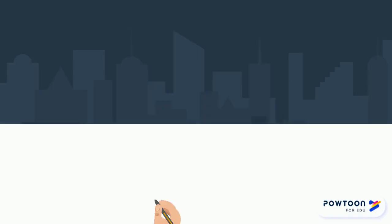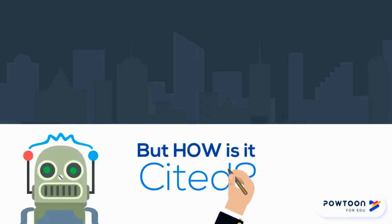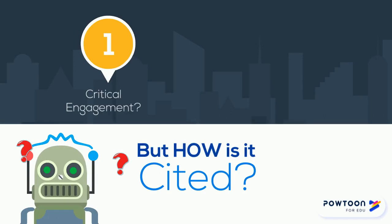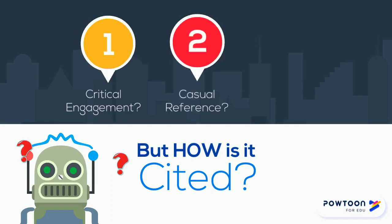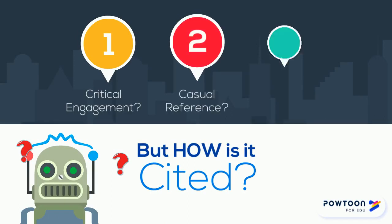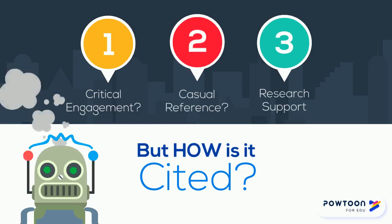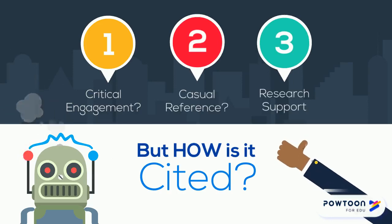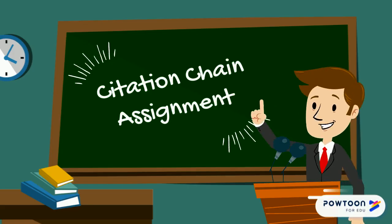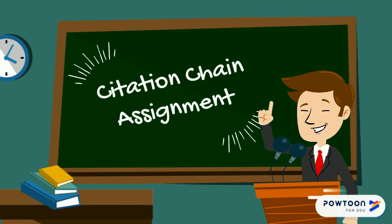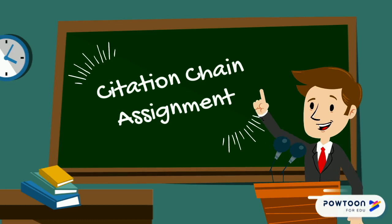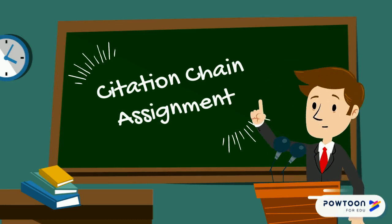The same is true of published scholarly works. Automated citation counters can't typically tell the difference between a critical engagement citation, a casual reference citation, or a standard research support citation — but a human reader can. So if you're building a citation chain for a special citation chain assignment, the success criteria for grading may or may not focus, in part, on how meaningful the connections between your sources are.